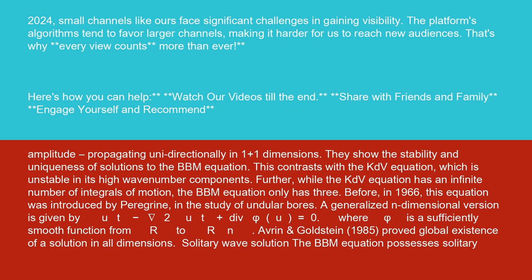Before, in 1966, this equation was introduced by Peregrine in the study of undular bores. A generalized n-dimensional version is given by ut minus nabla squared ut plus div phi u equals zero, where phi is a sufficiently smooth function from R to Rn. Averin and Goldstein, 1985, proved global existence of a solution in all dimensions.